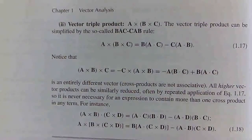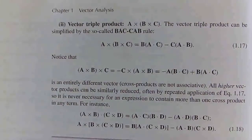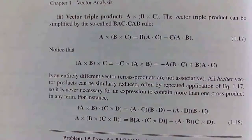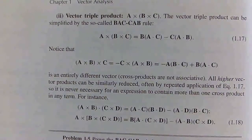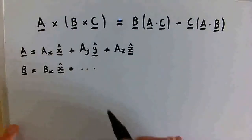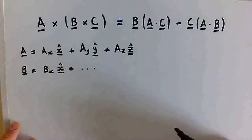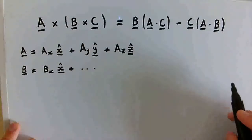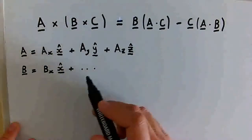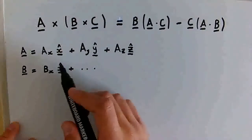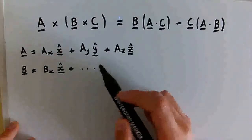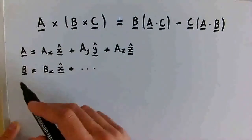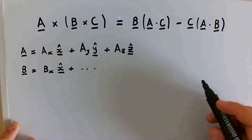The BAC minus CAB rule is shown here as equation 1.17, and we're going to be showing that this is true. I've written out the equation we're trying to verify again here. Here's how we're going to be splitting up our vectors using the unit basis vectors in Cartesian coordinates: x-hat, y-hat, and z-hat. The vectors A, B, and C will be referred to like this throughout.